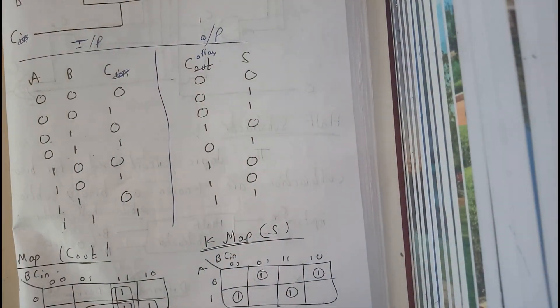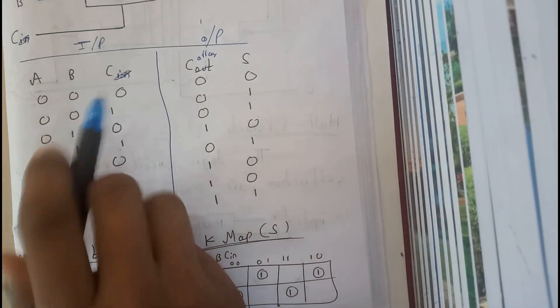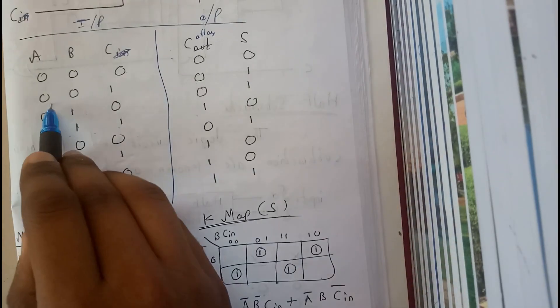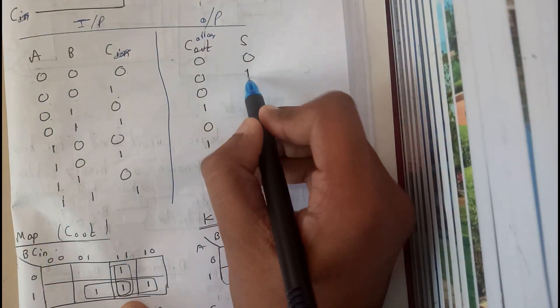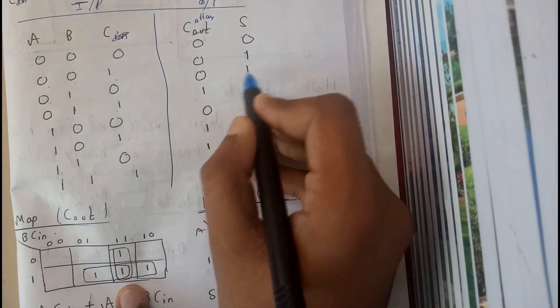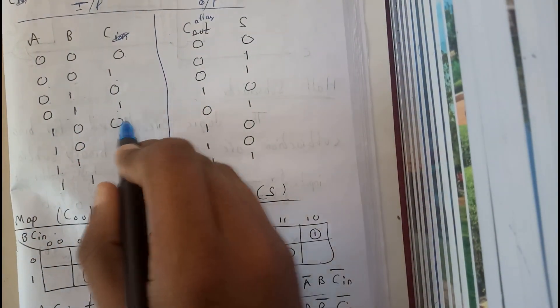So basically in the last tutorial we have discussed how to add them. So 0 plus 0 plus 0 is 0, 0 plus 0 plus 1 is directly 1, there is no need of carry. 0 plus 1 plus 0 is nothing but 1. So 0 plus 1 plus 1 is 1, 0. I have told you that according to the binary code.